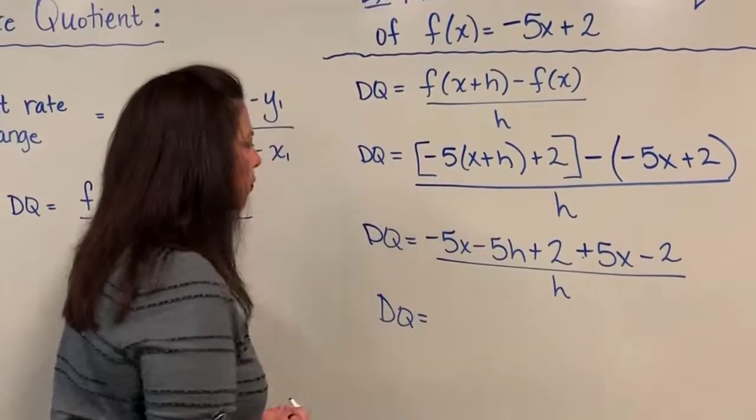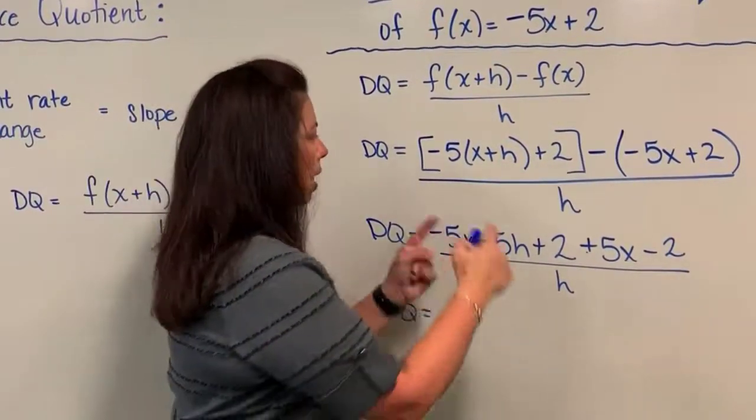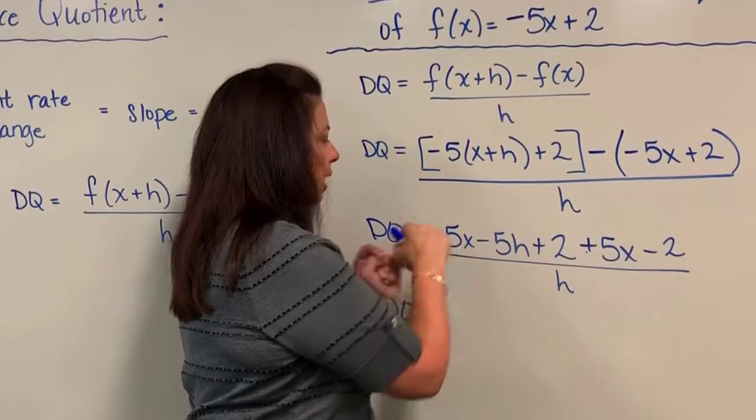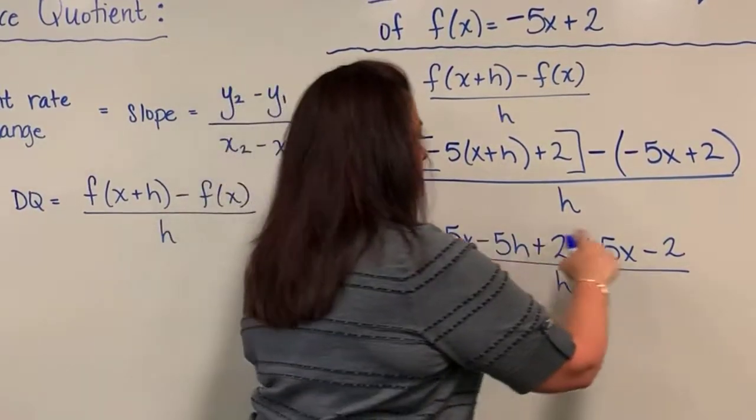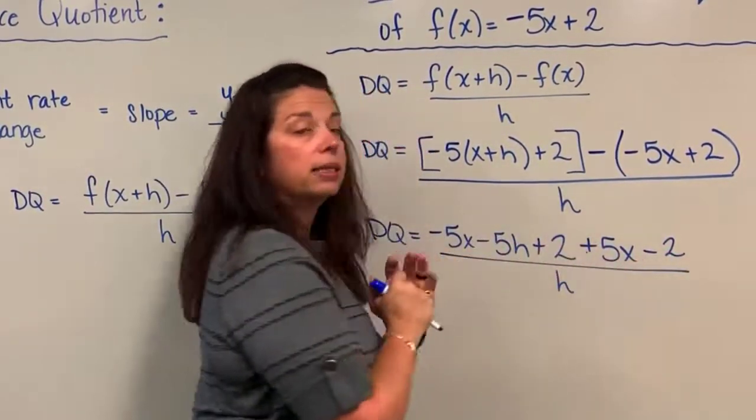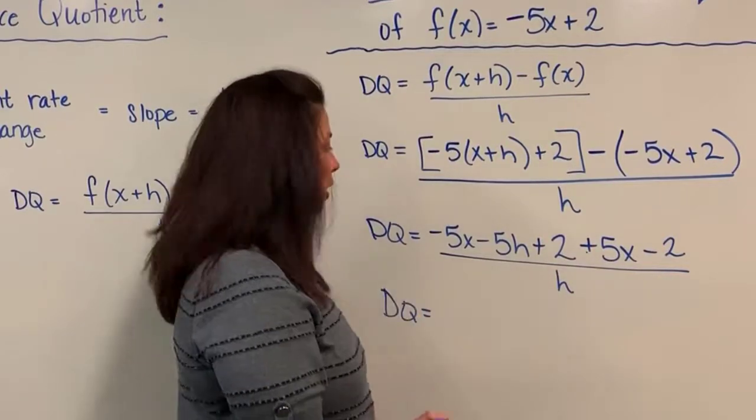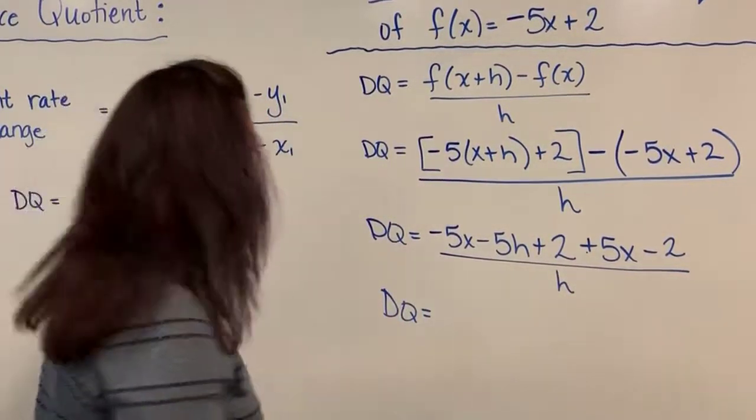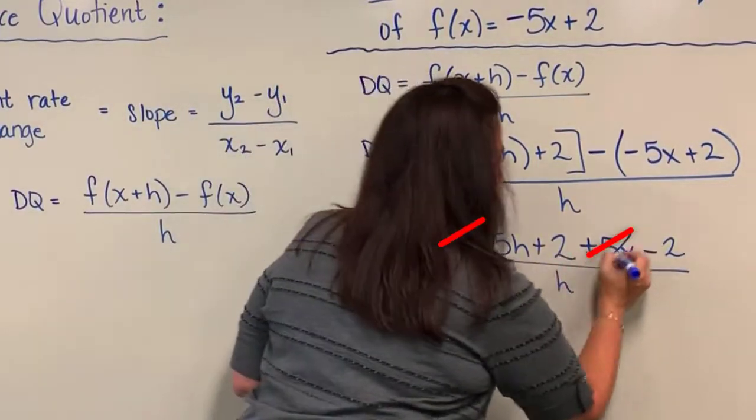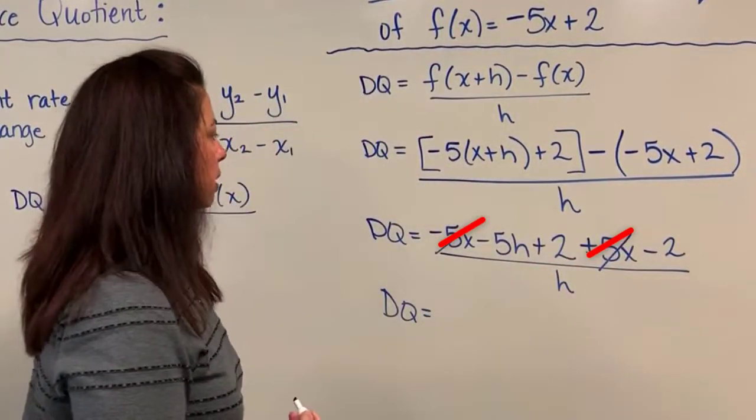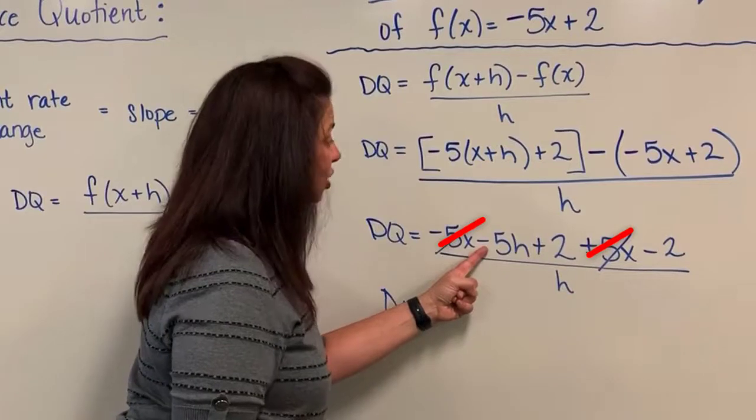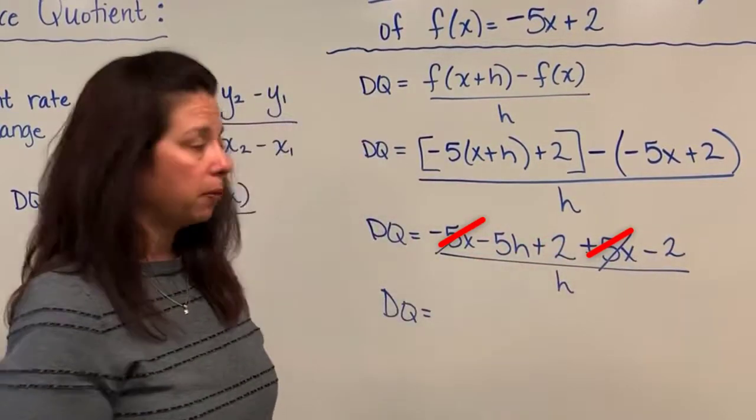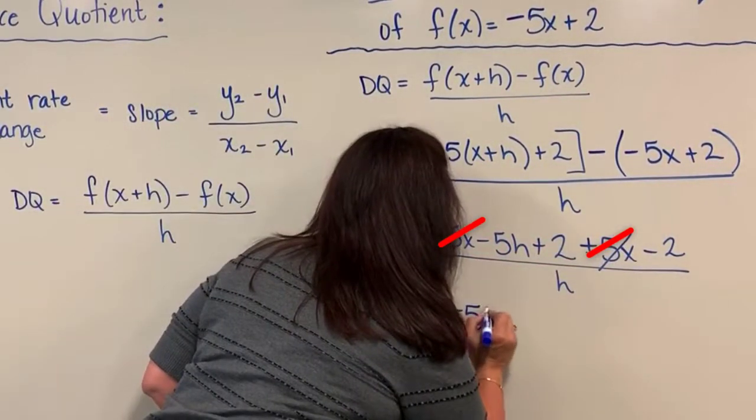Next step, I will have the difference quotient is equal to... now if you look carefully I have negative 5x here and I look down the line and notice I have another positive 5x. In those particular cases I have two terms that can subtract right out. So negative 5x subtracts out with a 5x. Negative 5h, I don't have any more h's that I can combine with it, so you just write it down negative 5h.